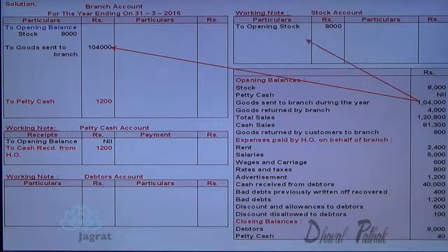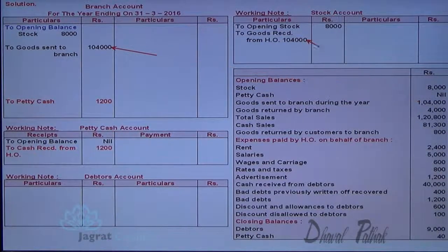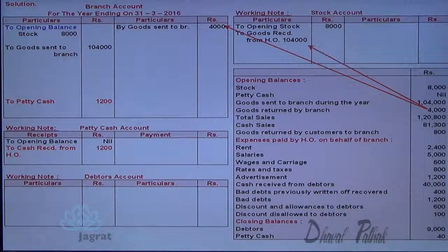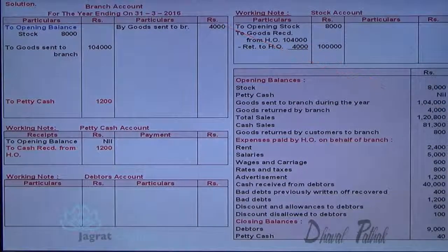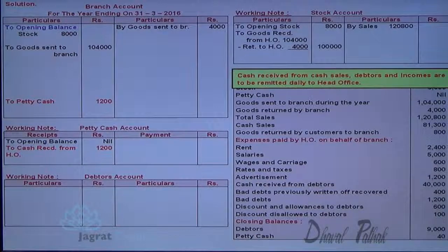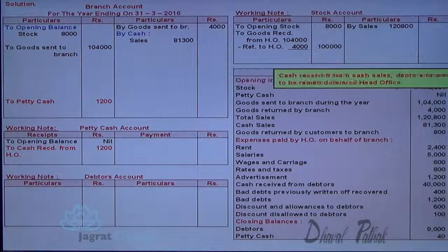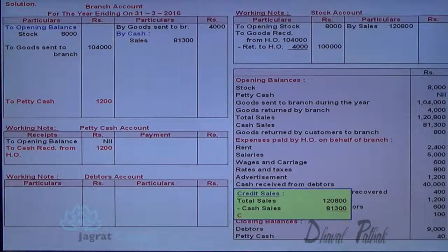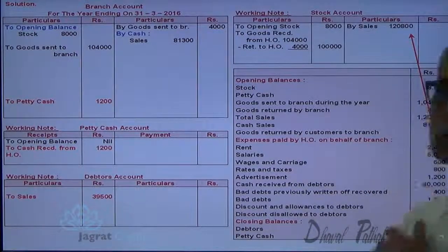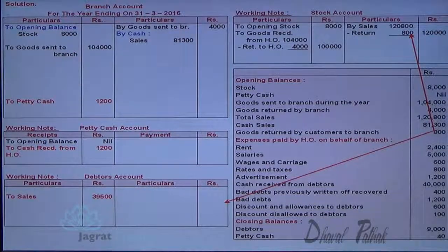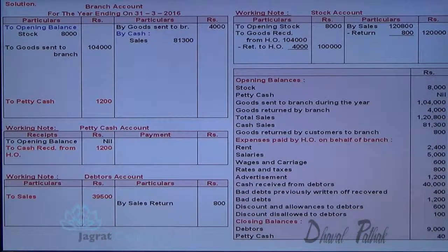Goods sent to branch — branch account debit to goods sent to branch account — will also appear as purchases in stock account. Goods returned by branch — branch account is credited for that — and this 4000 is deducted from goods sent, so net goods available to the branch for selling is: goods sent minus goods return. Total sales are recorded in the stock account. Cash received from cash sales is a remittance — cash account debit to branch account credit. Credit sales are recorded in the debtors account in the working note.